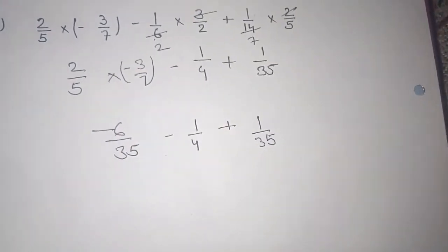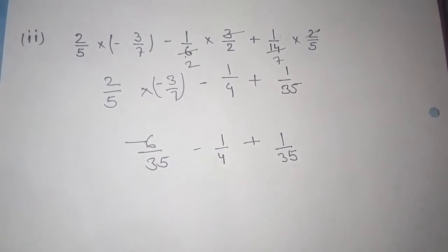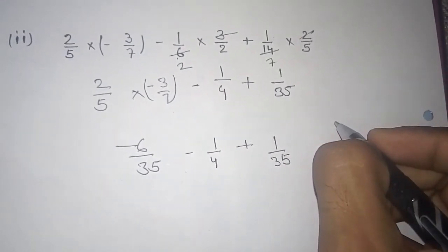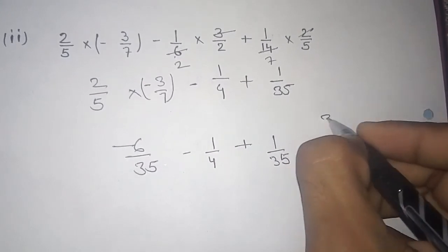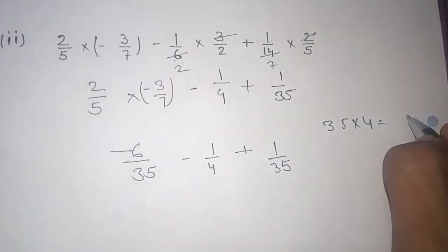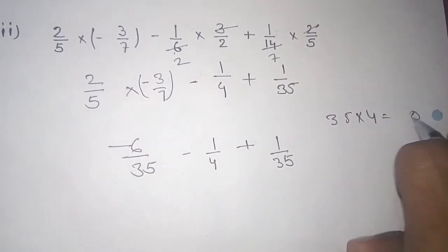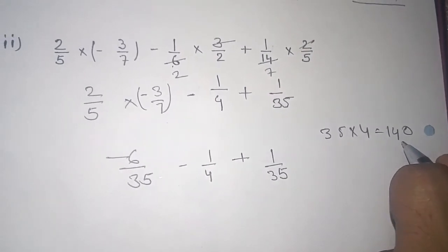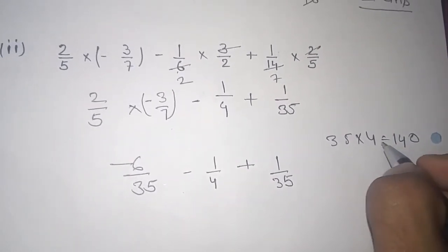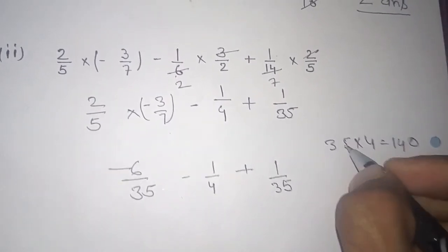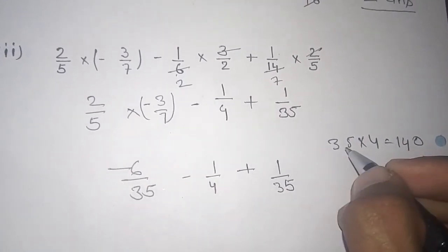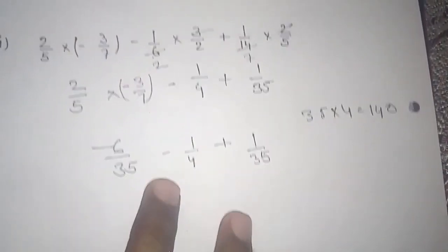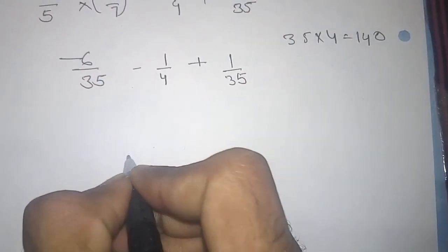Again we are going to take the LCM of these numbers. I think we should multiply 35 by 4 to get our LCM — it becomes 140. Let me show you: 5 × 4 is 20, carry 2; 3 × 4 is 12 plus 2 is 14. So our LCM is 140.